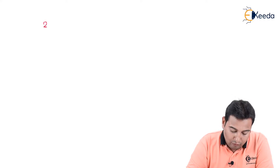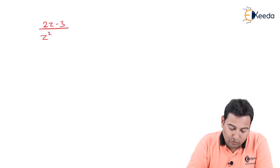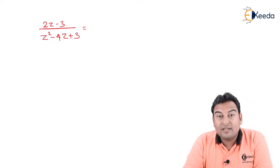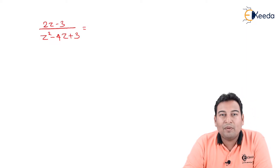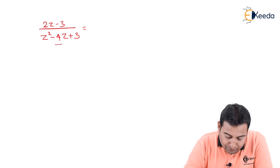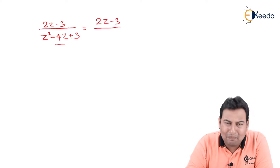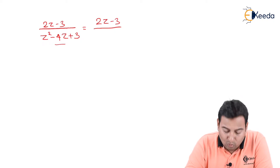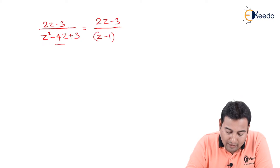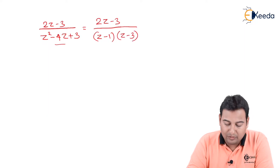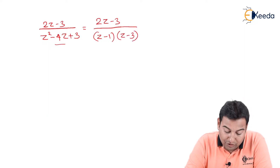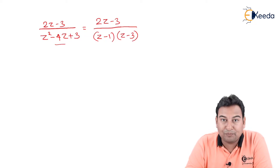The first step will remain the same — that is partial fractions. We have (2z - 3) upon (z² - 4z + 3). For applying partial fractions, there should be factors in the denominator. We have a quadratic equation, so we need to convert it into factors. By simple method, you can get two roots: z minus one and z minus three. These are the two factors of z² - 4z + 3.